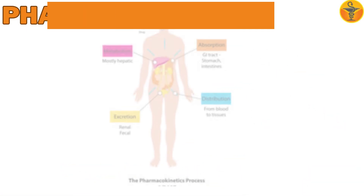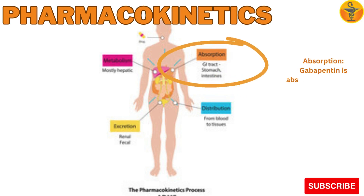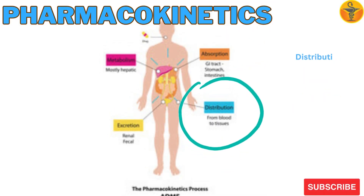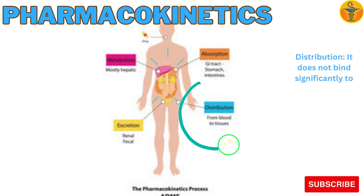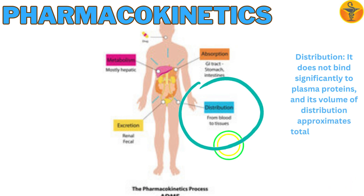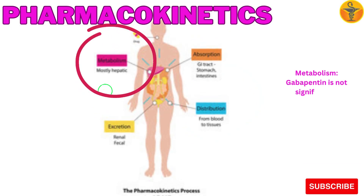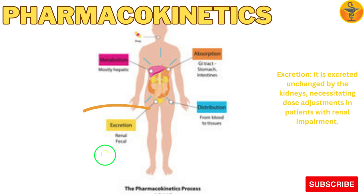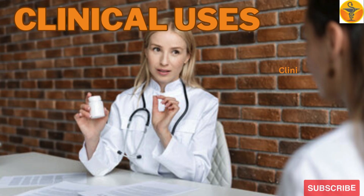Pharmacokinetics. Absorption: Gabapentin is absorbed in the small intestine, with bioavailability decreasing at higher doses. Distribution: It does not bind significantly to plasma proteins, and its volume of distribution approximates total body water. Metabolism: Gabapentin is not significantly metabolized by the liver. Excretion: It is excreted unchanged by the kidneys, necessitating dose adjustments in patients with renal impairment.